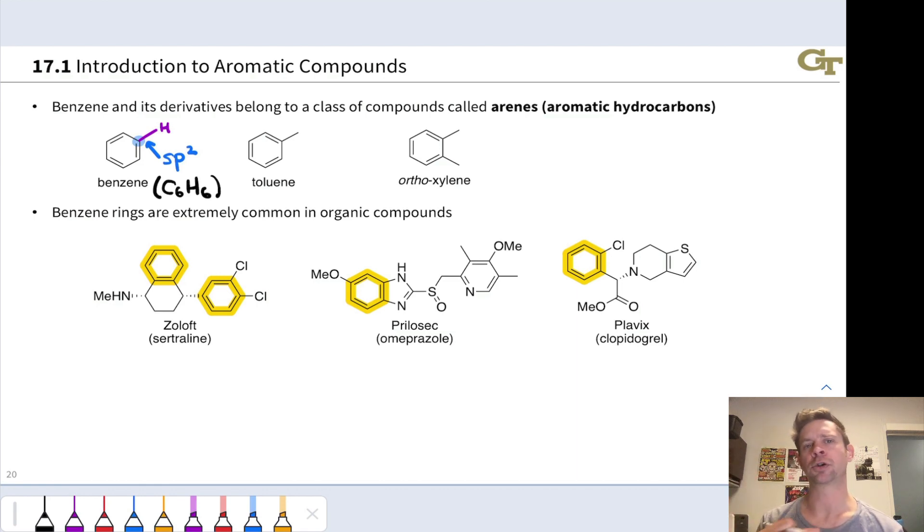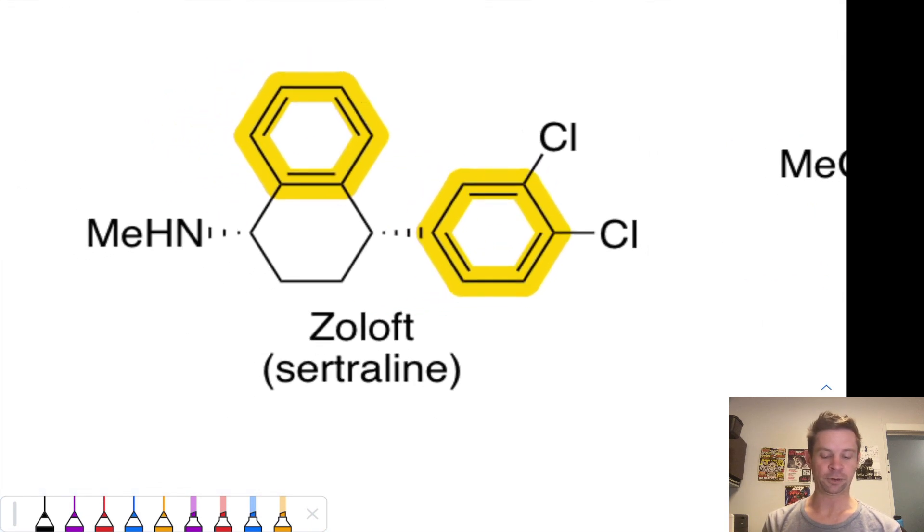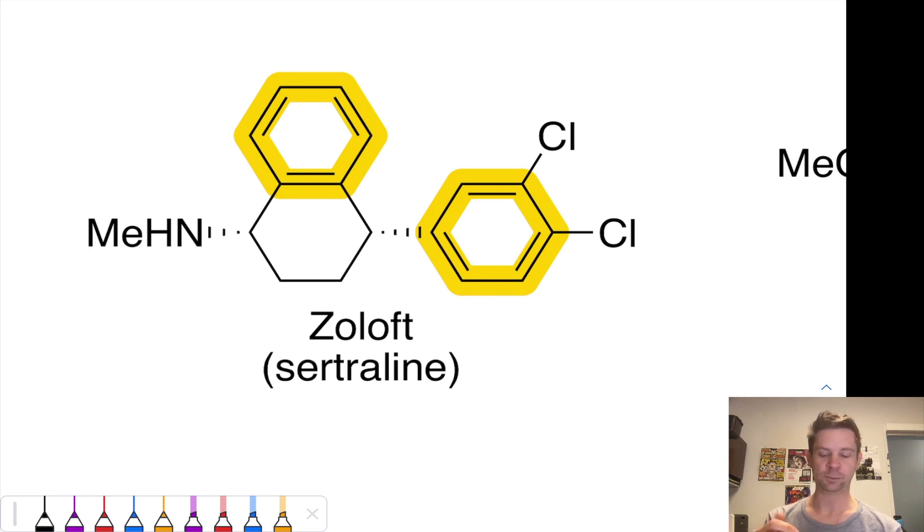And benzene rings are ubiquitous in organic compounds. So three examples of pharmaceuticals are shown on this slide, and the benzene rings in these compounds are highlighted. These actually also contain aromatic heterocycles, and we'll return to those a little bit later. So here, for example, Zoloft, antidepressant. We've got two benzene rings highlighted in yellow there.